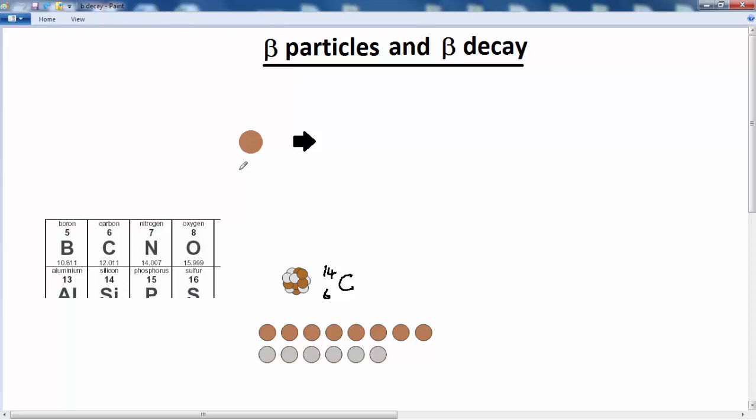What actually happens is that a neutron decays into a proton and an electron. We write P for proton and an electron. The electron in this decay process is known as a beta particle.